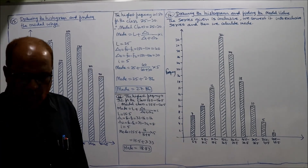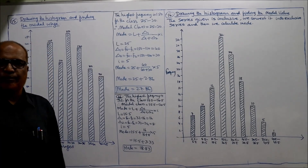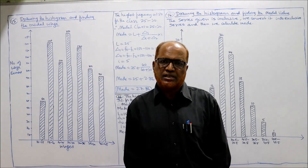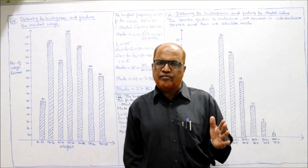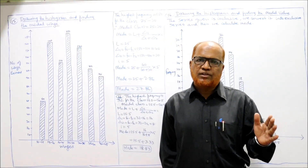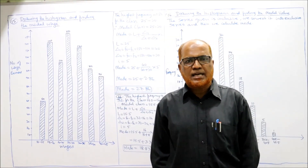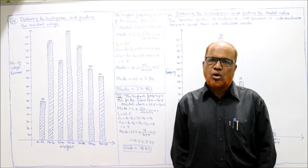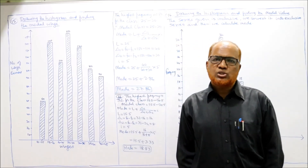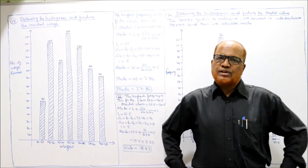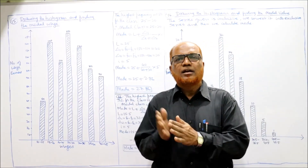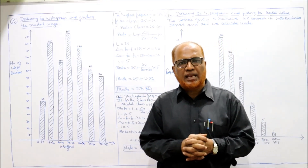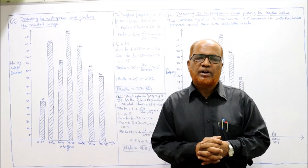We have completed all 16 problems on calculation of mode. The first two problems were on individual series, three to four problems on discrete series, and the remaining on continuous series. This is all about mode. We have completed arithmetic mean, then median, and now mode. In the next session, we will start the next average called geometric mean.